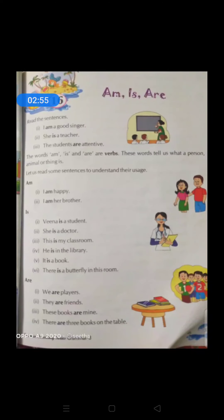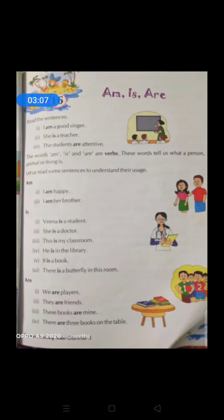I am her brother — we can see her brother and sister here. I am very happy and I am her brother. Second: Venu is a student. So in the first two sentences with 'am', what have you observed? Always with 'I' we use 'am'.